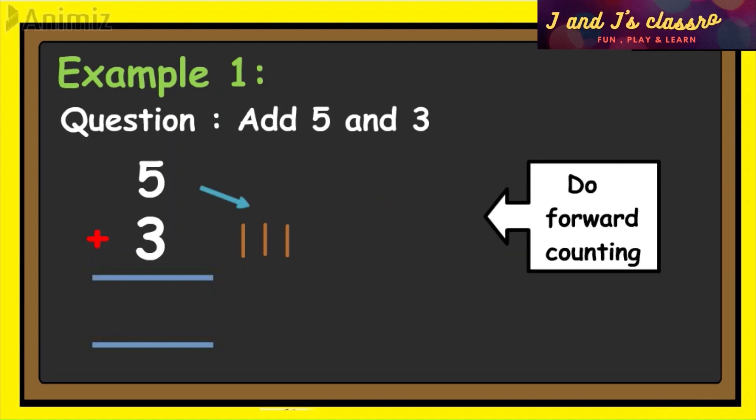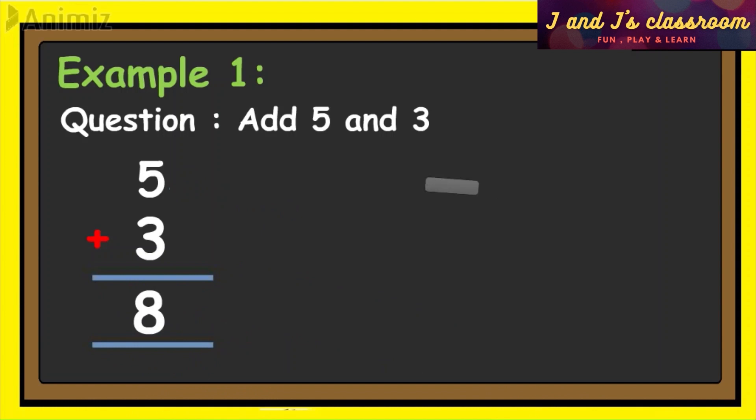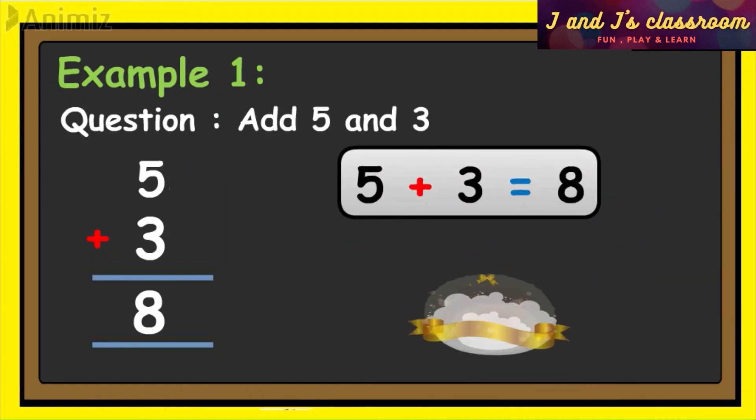And do forward counting. After five: six, seven, eight. Yeah, now write eight. So when we add five plus three is equal to eight.